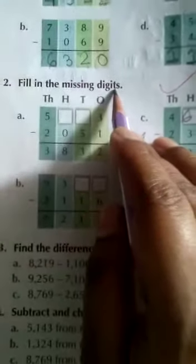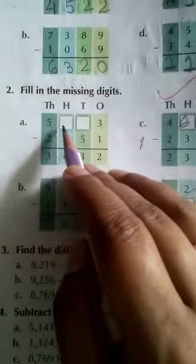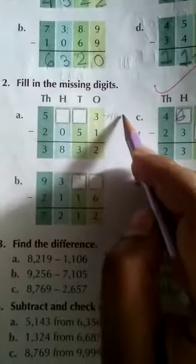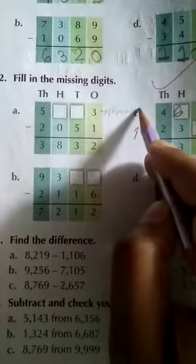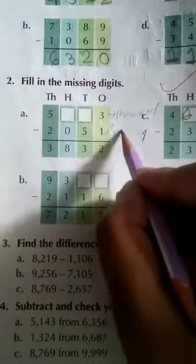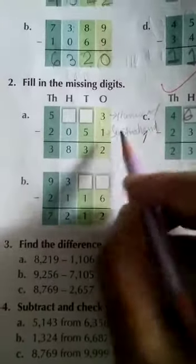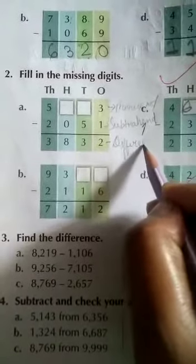Now come to question number 2. Here you see question given: fill in the missing digits. So here you see 5 dash dash 3 given, so this is what students? This is minuend. Already I have discussed in the class, and this is what? This is subtrahend. And what is this? This is difference.